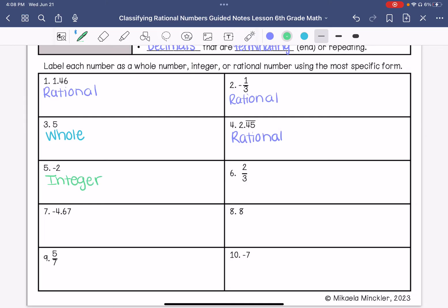Number 6, 2/3, that is going to be rational. Number 8, which is 8, is a whole number.